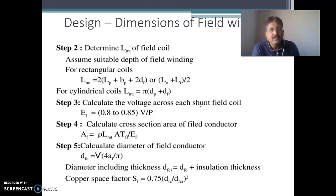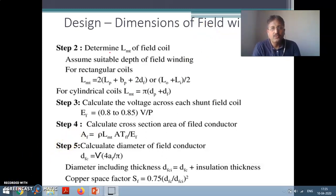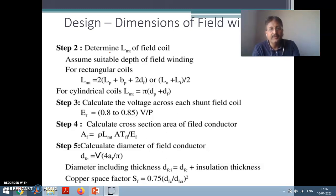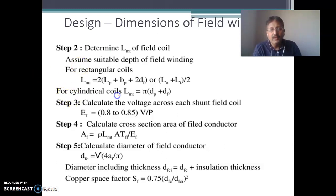The second important part is the design and dimension of the field winding. The task is to find out the length of mean turn (LMT) for the shunt field coil. When you wind the first turn around the pole it has the minimum length, and the outermost has the maximum length. For a cylindrical or circular coil, LMT = π × d. For a rectangular coil, it is LMT = (L_O + L_I) / 2.